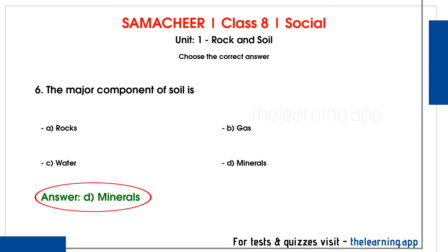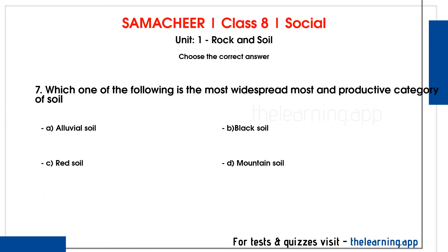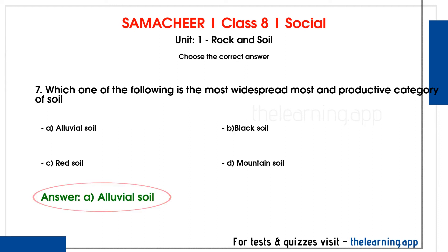Which one of the following is the most widespread and productive category of soil? Options are A. Alluvial soil, B. Black soil, C. Red soil, D. Mountain soil. Correct answer is option A, Alluvial soil, because of water.